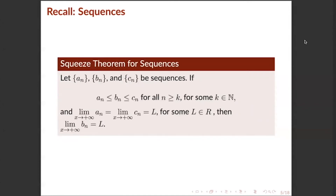We also have the Squeeze Theorem for sequences. Let {a_n}, {b_n}, and {c_n} be sequences. If a_n ≤ b_n ≤ c_n for all n ≥ k, for some natural number k, and the limits of {a_n} and {c_n} are both equal to some real number L, then the limit of {b_n} is also equal to L.